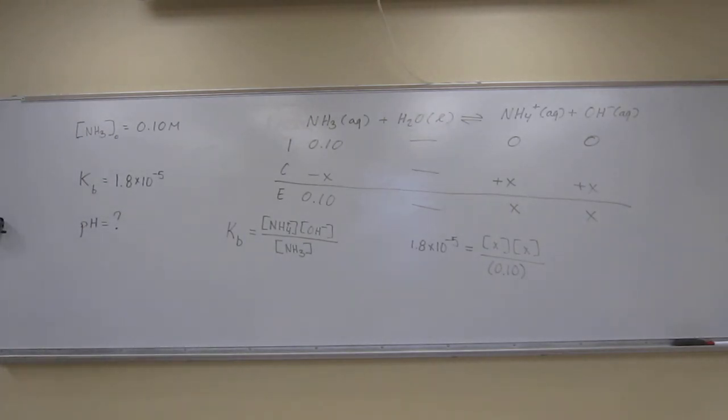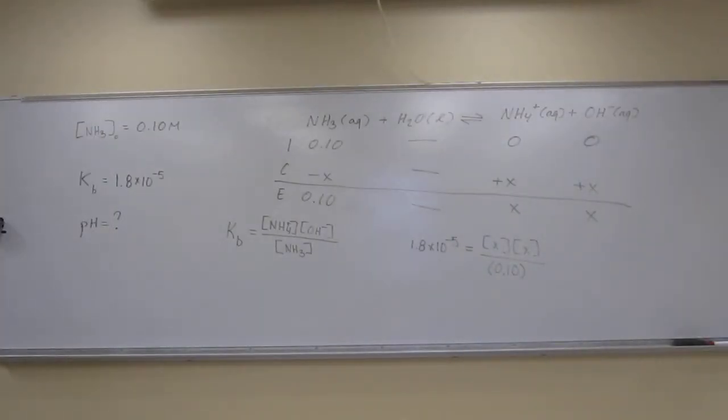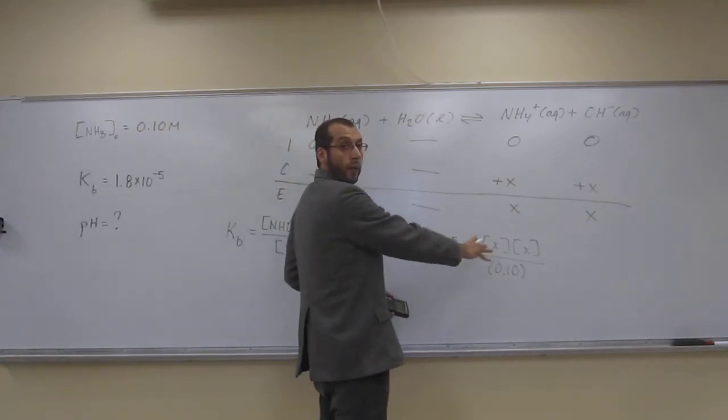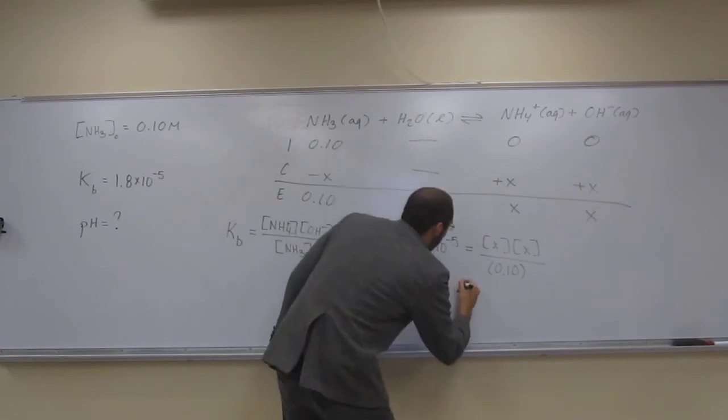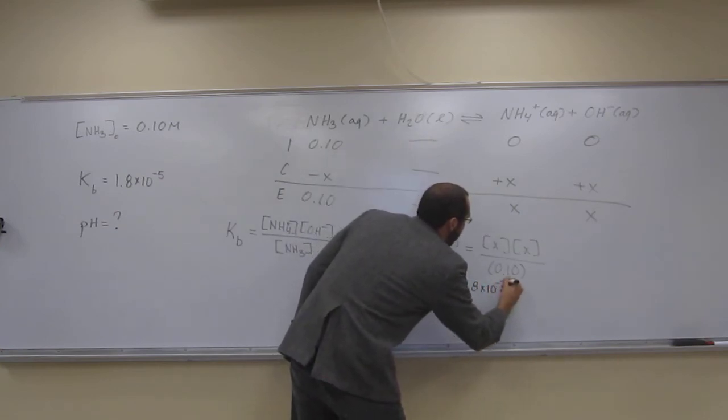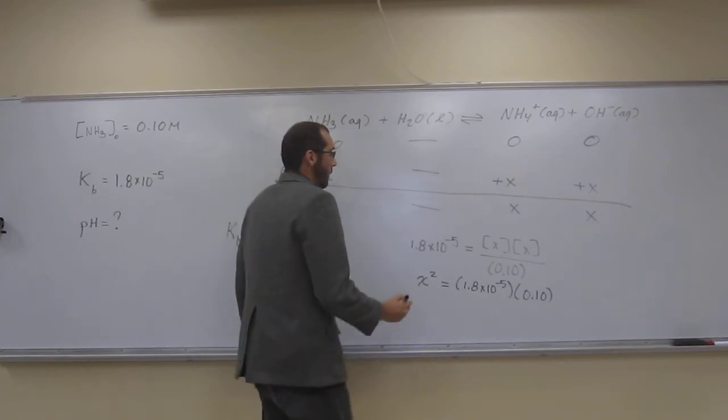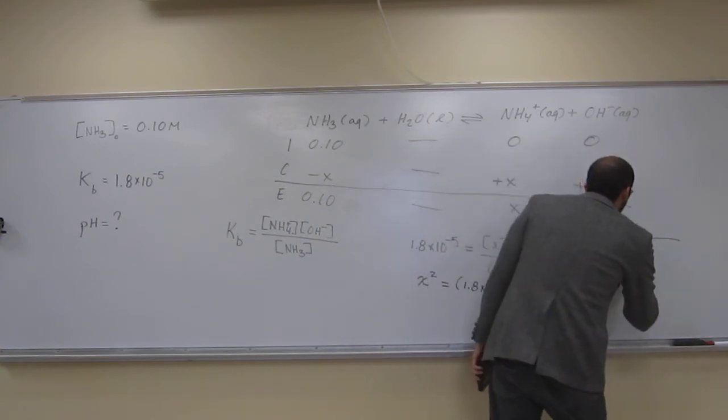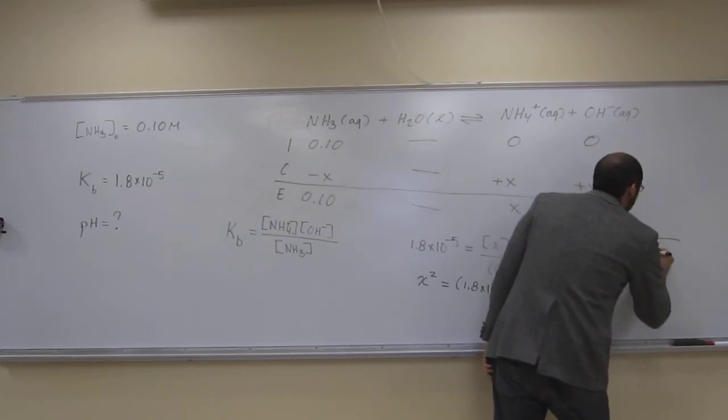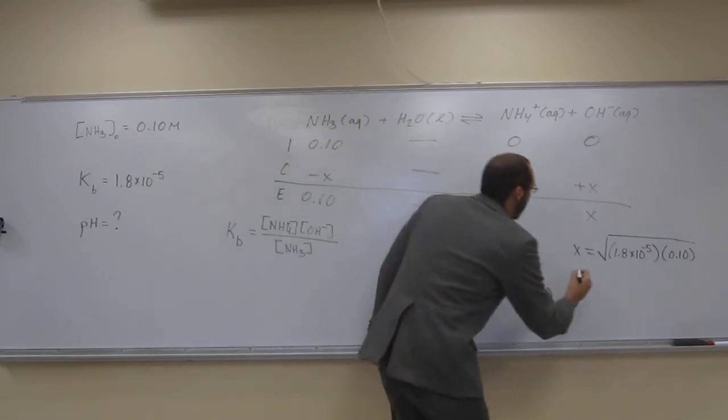So now we're just going to algebraically manipulate this equation. Get your calculators out so we can do this all together. I'm going to get a pen that starts writing a little darker. So let's rearrange this equation to solve for X. What are we going to get? We're going to get X squared equals 1.8 times 10 to the negative 5 times 0.10. Does that make sense there?